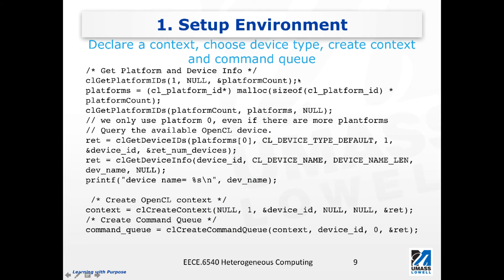Let's begin with the first step: setup environment. Here we will look at how we query the platform and device, how we declare a context, and how we create a command queue. The first line of code is to get the platform ID. Note that all OpenCL functions start with 'cl' in lowercase followed by the operation name.